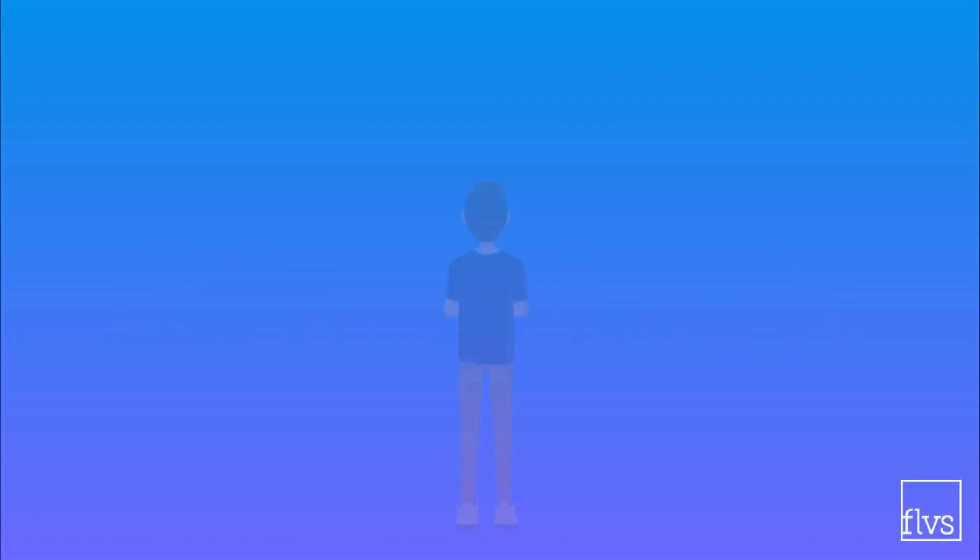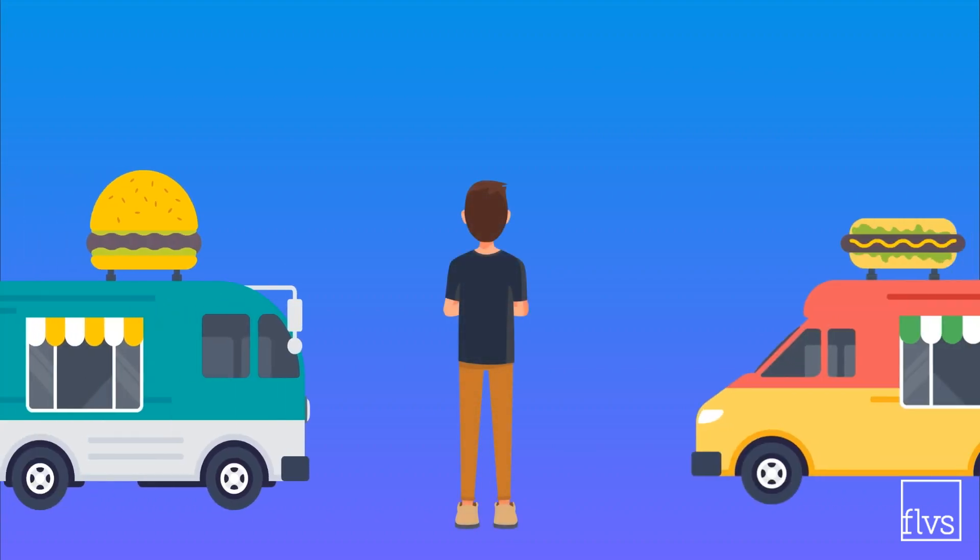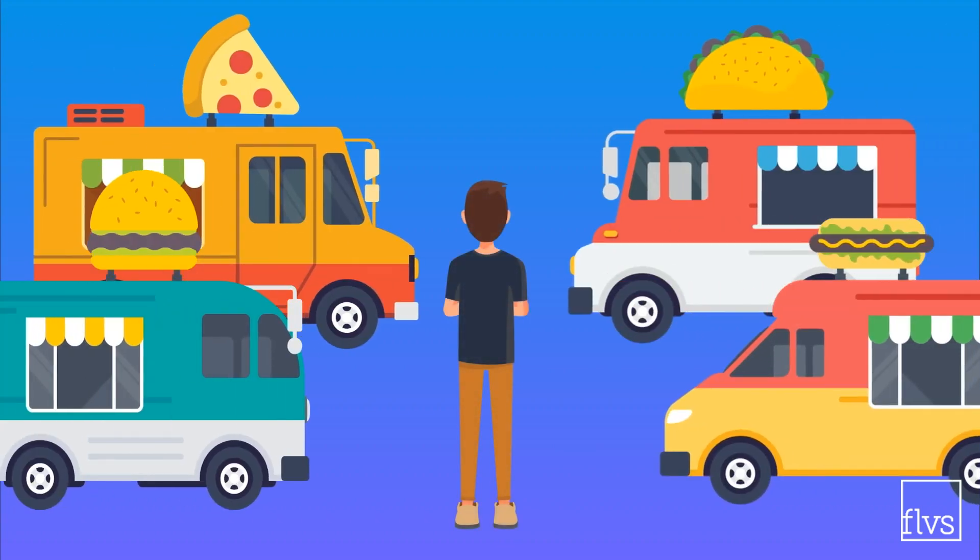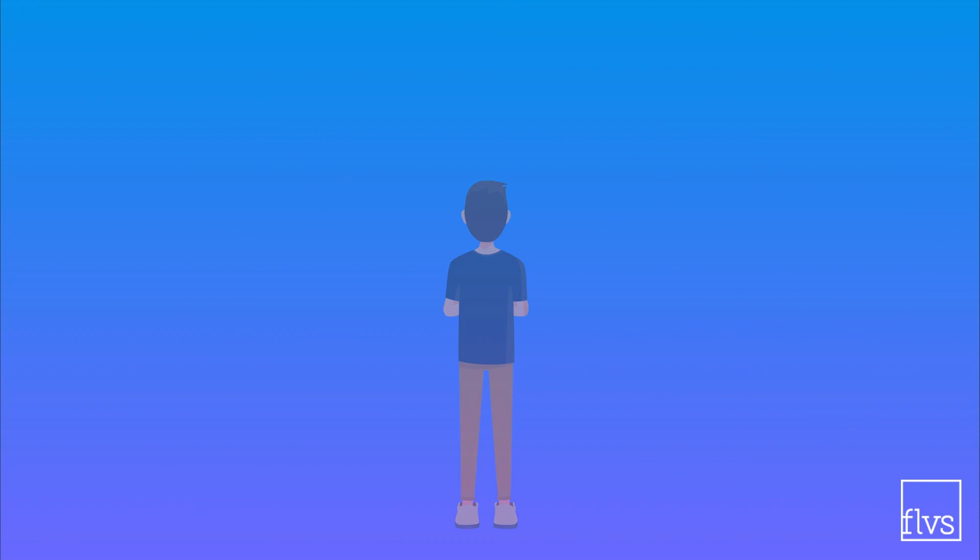As humans, we've got choices. We can make decisions based on our emotions, logic, or let's face it, our level of hunger. For computers, it's a little bit different. They can only make logic-based decisions. Literally, this means a programmer has to write code that tells a computer exactly what to do.